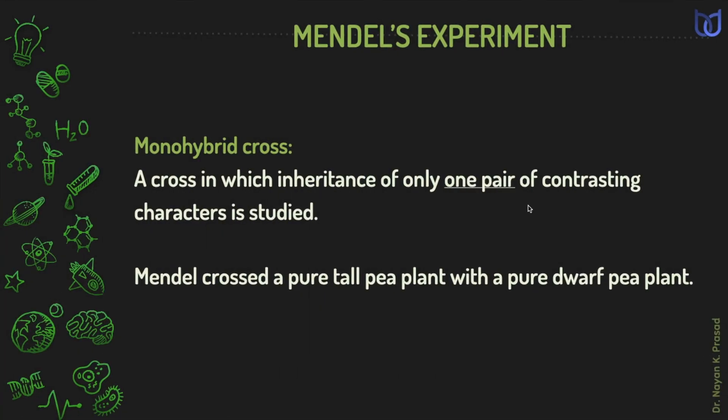Now, let us see Mendel's experiment. Mendel performed several experiments on pea plants. One of the most simple experiments is called monohybrid cross. It is a cross in which the inheritance of only one pair of contrasting characters is studied. The ratio obtained in F2 generation is called monohybrid ratio. Remember, F2 generation means second filial generation.